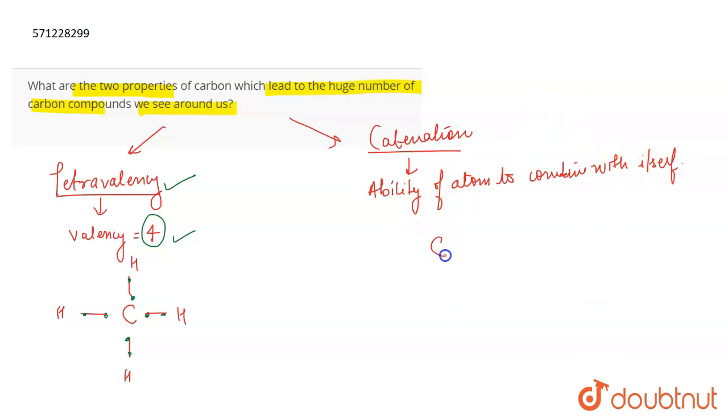For example, this carbon can combine with itself and lead to the formation of long chains. It can also lead to the formation of branch chains. It can also lead to the formation of ring compounds. So catenation is basically the ability of the carbon atom to combine with itself.